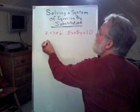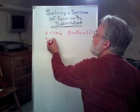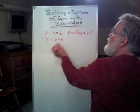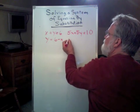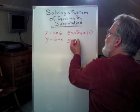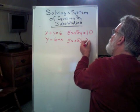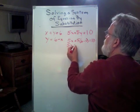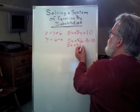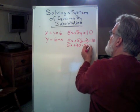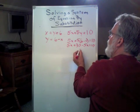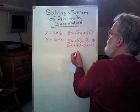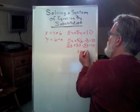This time I'm just going to solve for y. y equals 6 minus x. So every place I see a y, I'm going to put in 6 minus x. Now I have 5x plus 5 times (6 minus x) equals 10. So I have 5x plus 30 minus 5x equals 10.